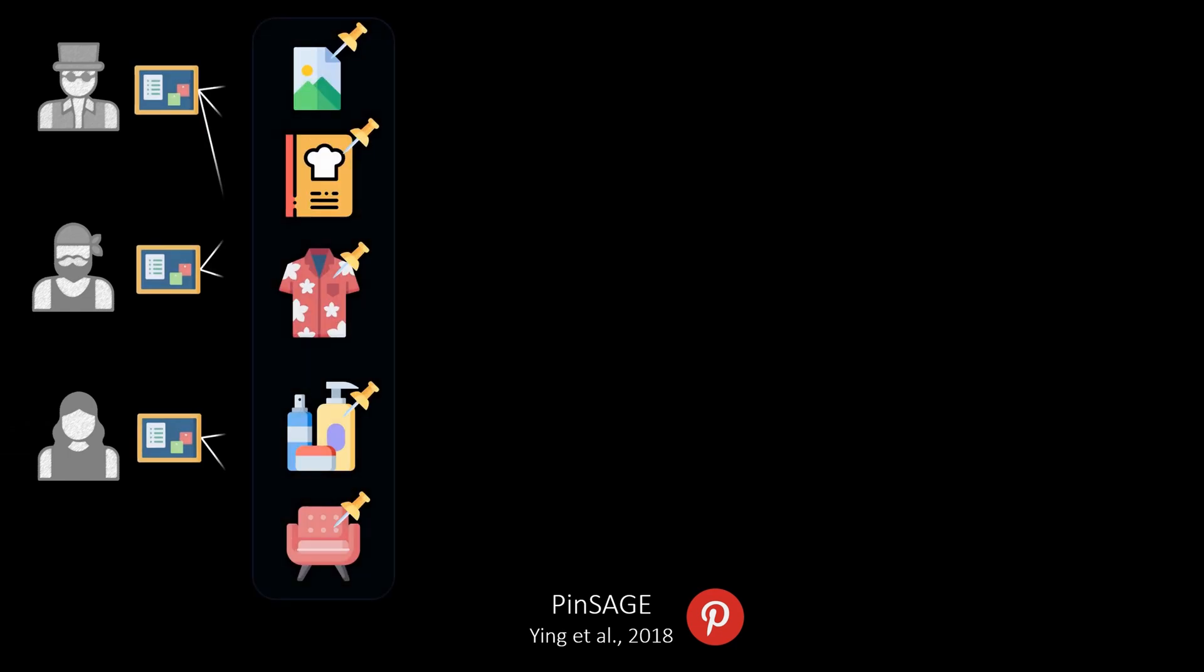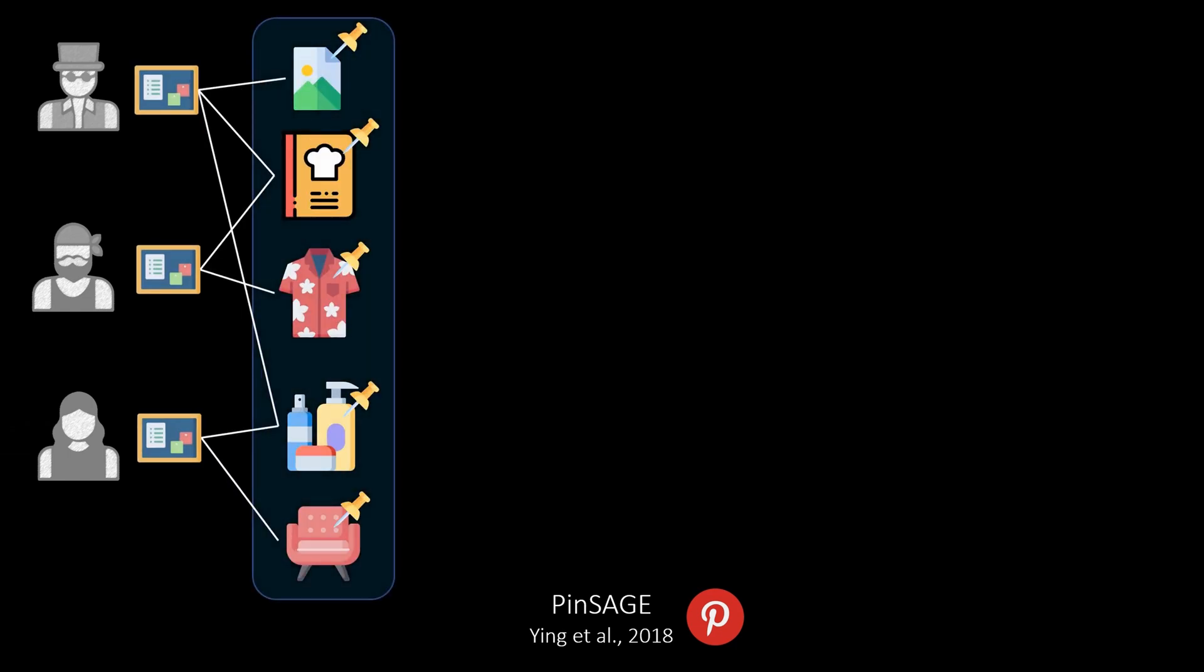Another GNN-based recommender model is called PinSage and was developed by researchers from Pinterest and Stanford University. On Pinterest, the users can have boards on which they pin items they are interested in, such as images, recipes, clothes and more. Of course, these items can be shared among the boards and modeled as a graph, we end up with another bipartite graph. So far, so good.